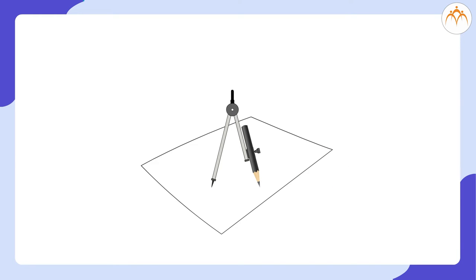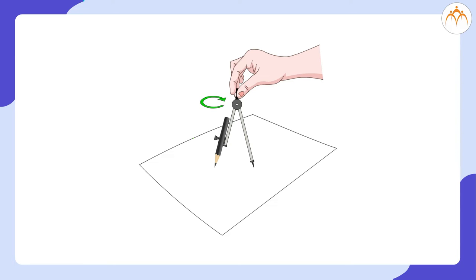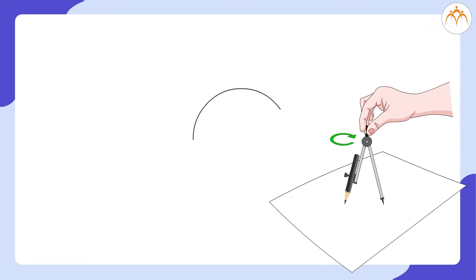Take a distance between these two tips. Take any point on the paper. Hold the metal tip firmly on that point. Hold the back end screw of the compass. Now, turn the pencil around the metal tip on the paper. Remember, this shape is a circle.